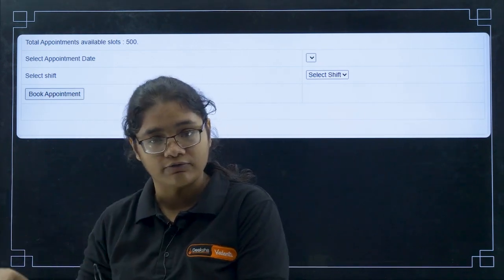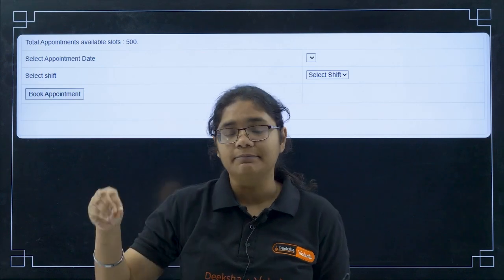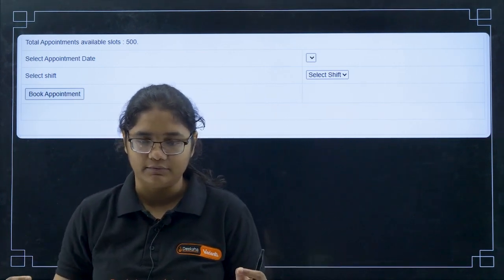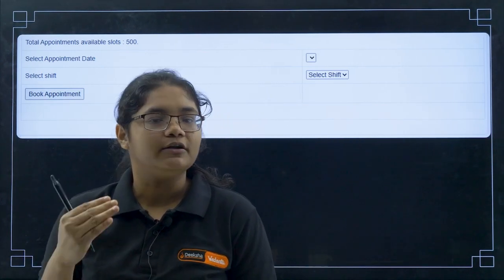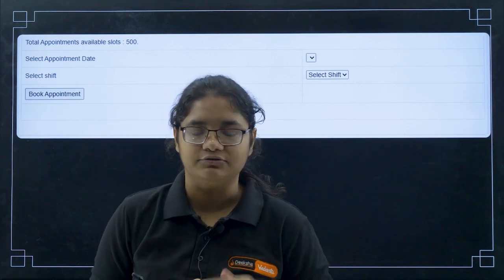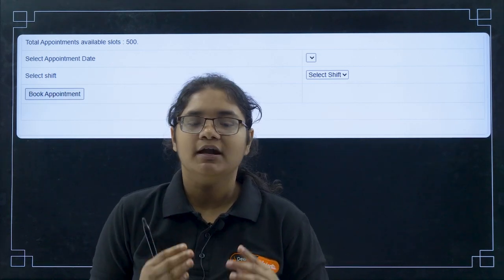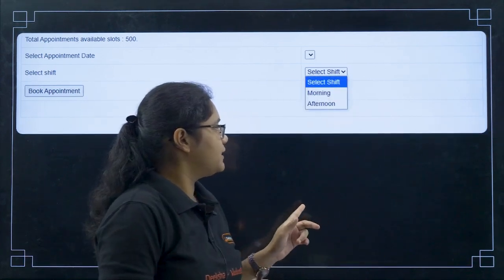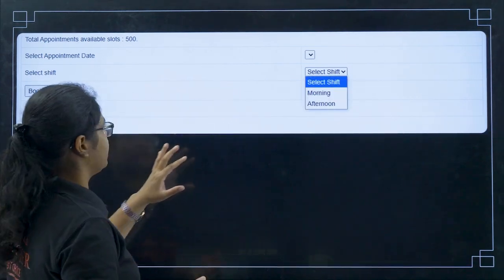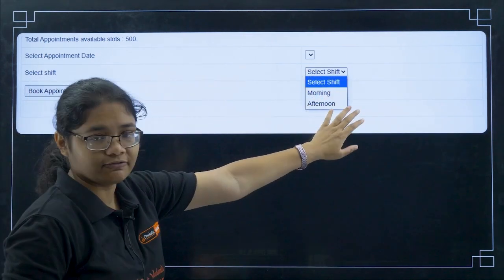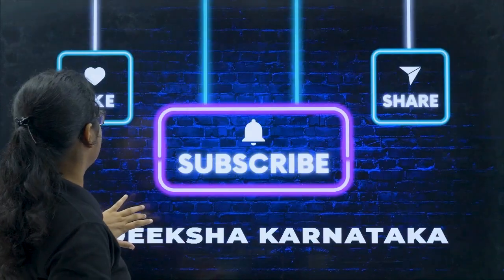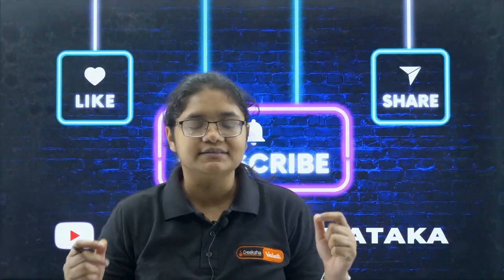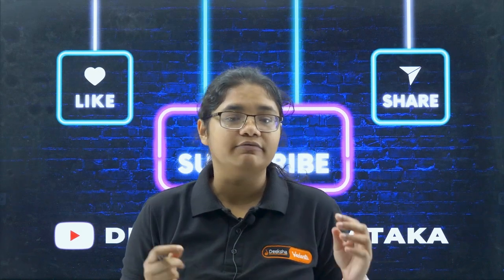After booking, you have to reach the KEA office at Maleshwaram at the particular time and slot you have chosen. There you can do whatever verification, clarification, or editing is needed — the KEA officials will help you. You can select either the morning or afternoon shift.